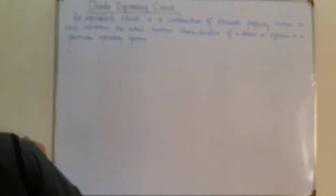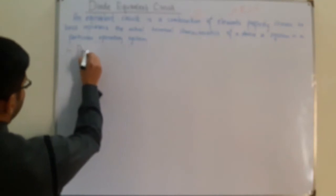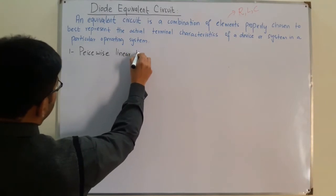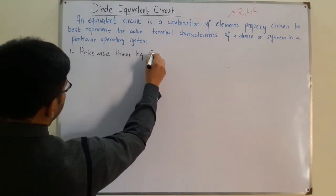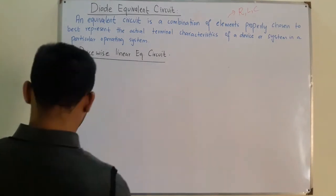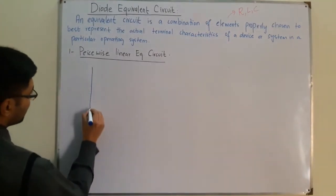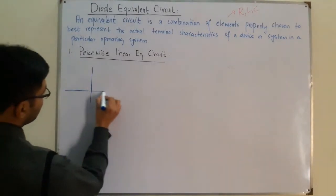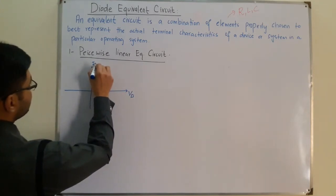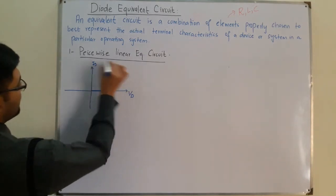The first is the piecewise linear equivalent circuit. As you know, we have a curve with axes VD and ID — it goes until VB and then rises.